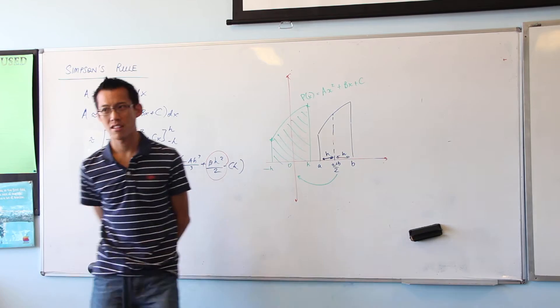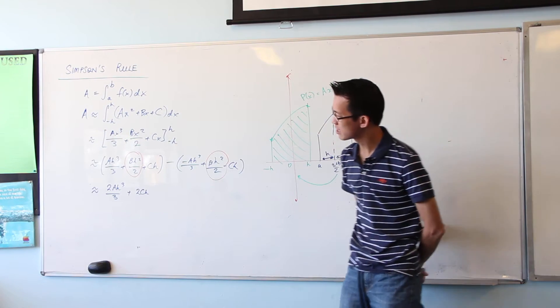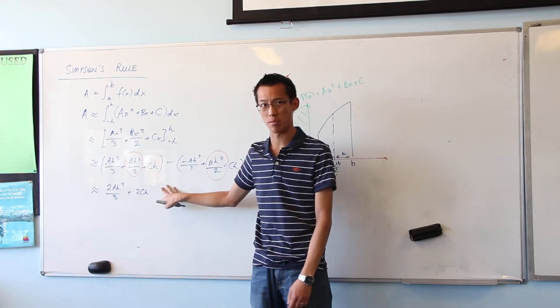Okay, so here's what I now have. Approximately equal to 2 a h cubed on 3 plus 2 c h, by the looks of that. Is that all right? So far, so good? Okay, now you look at that and you're like, well, okay, it's kind of simpler, right?